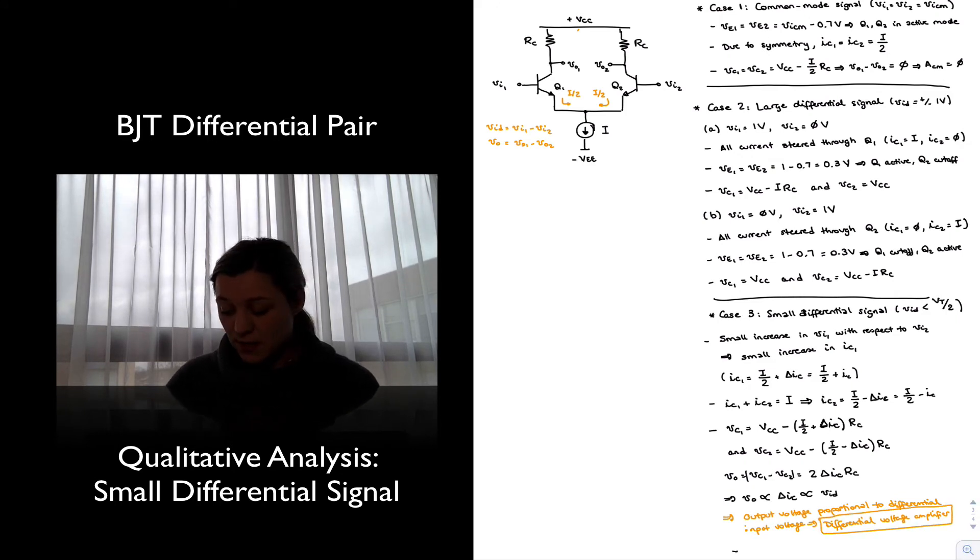And as we have seen, it's going to have an output that is proportional to the differential signal, but also, as we saw in case one, its common mode gain is going to be ideally equal to zero. So it gives us a circuit with good characteristics to create a differential voltage amplifier.